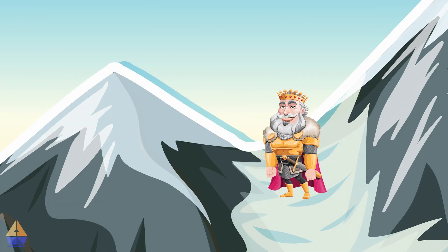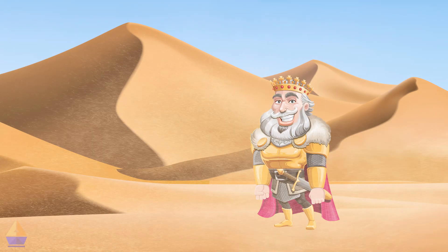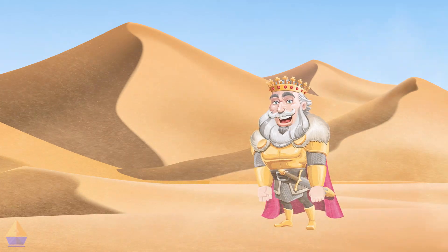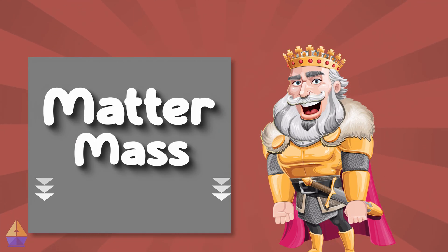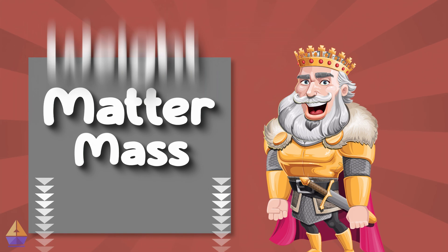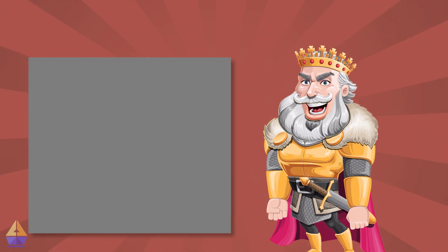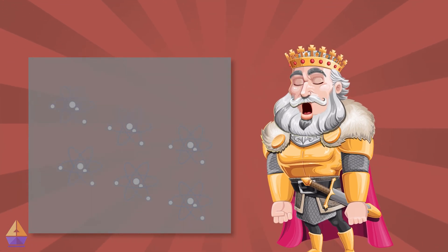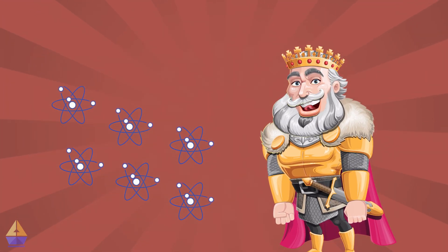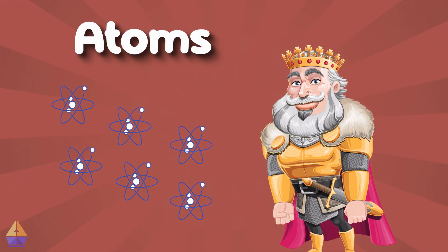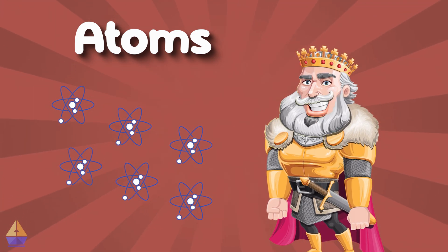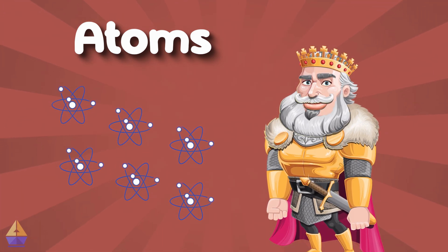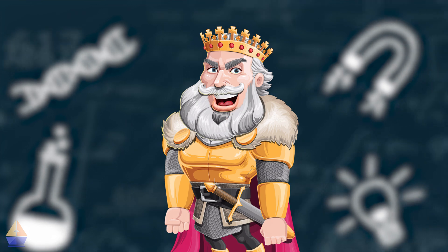Are you ready for an exciting adventure into the invisible world of matter? Let's begin! Everything in our world, from mountains to grains of sand, is made of something called matter. Matter takes up space and has mass, which means it has weight. But here's the fun part: all matter is made up of tiny particles called atoms. They're so small, only the world's most powerful microscopes can see them.